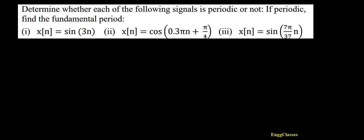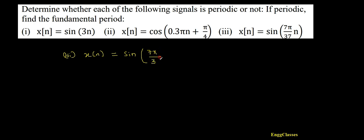Hello everyone, welcome to NG Classes' YouTube channel. In this video lecture, we'll consider the third numerical under periodic and aperiodic signals, which states that x of n is equal to sine of 7π divided by 37, into n. The task is to determine: is this signal periodic or not? If periodic, what is its fundamental period going to be?